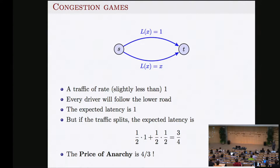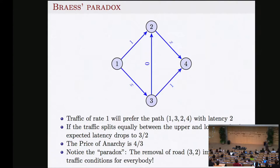We lose 33% — latency is 33% higher than the optimal solution. Here is another network called the Braess Network, which is infamous. Again drivers go from left to right, from node one to node four. The network has roads with latency one, roads with latency proportional to traffic, and a corridor with virtually no latency at all.